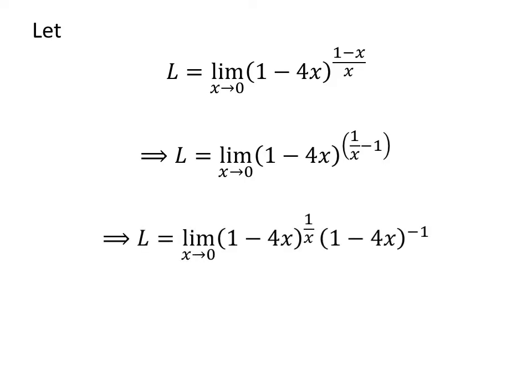So, now the limit can be written as L equals limit of 1 minus 4 times x raised to the power of 1 upon x times 1 minus 4 times x raised to the power of minus 1 as x approaches 0.